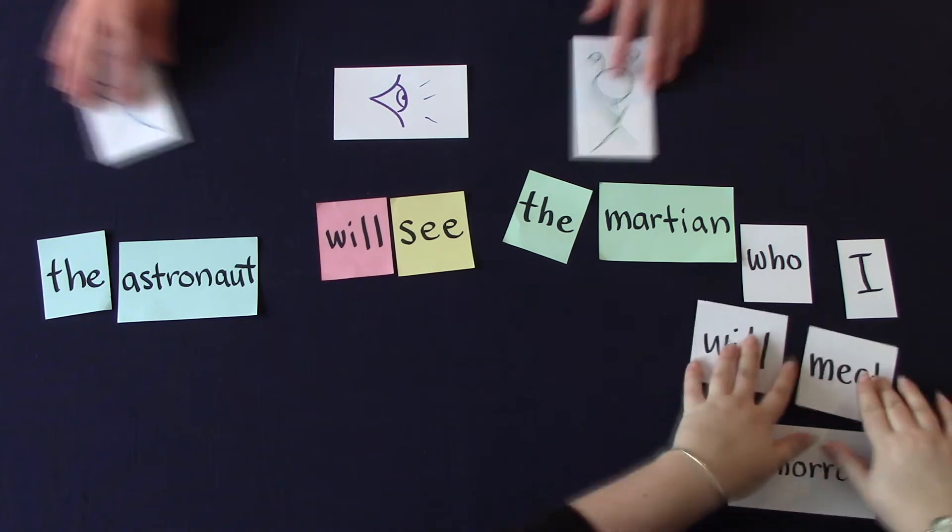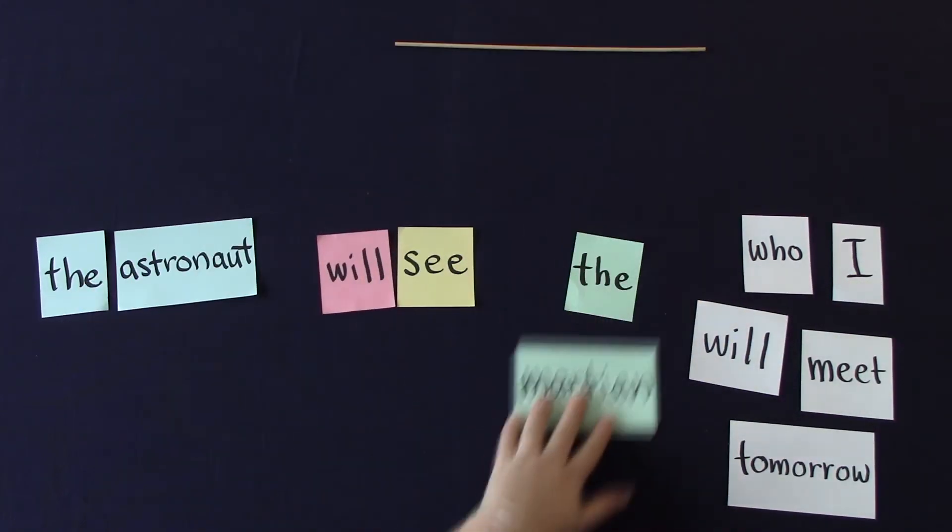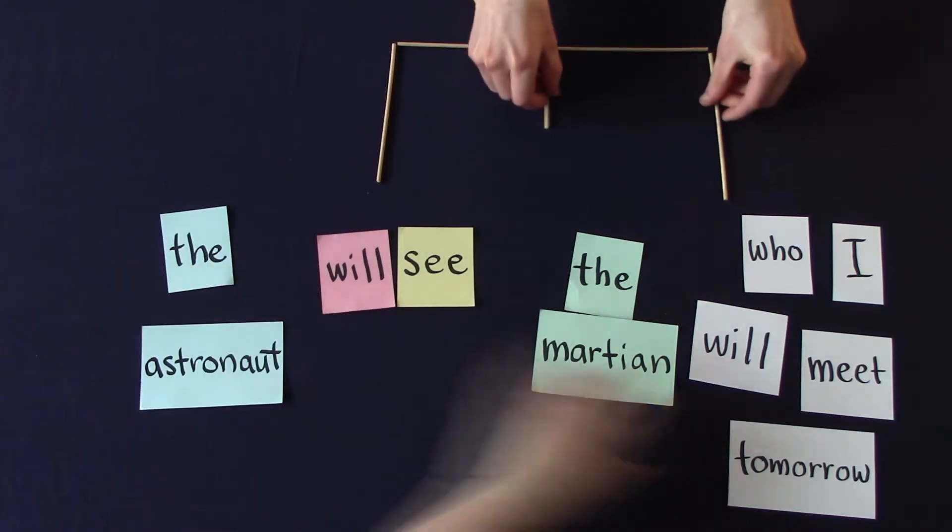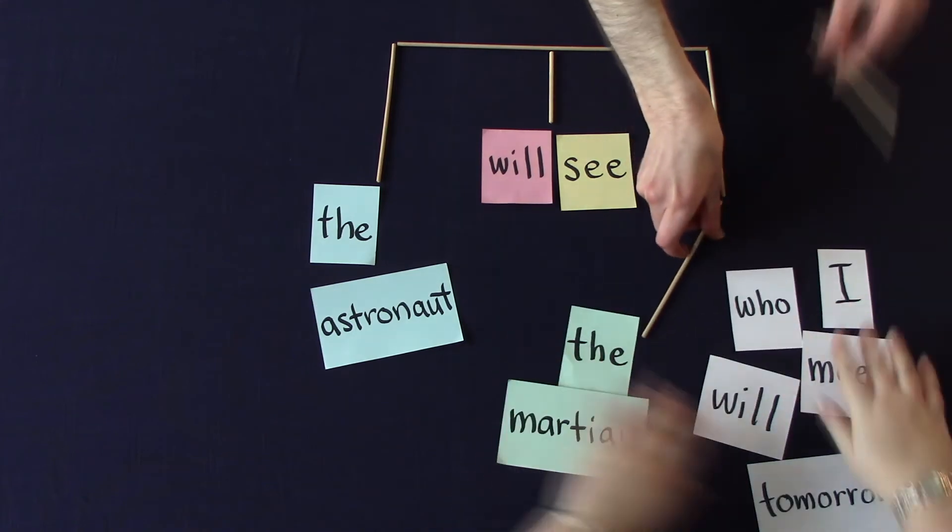Who's doing the seeing? The astronaut. What's the action? We'll see. Who's being seen? The Martian, who I'll meet tomorrow. We can also split up that last part under the same node.